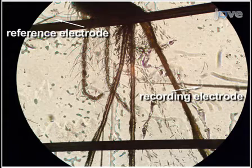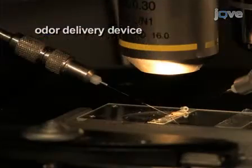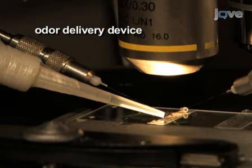Adjust the height of the electrodes so that the reference electrode is positioned just above the eye of the mosquito and the recording electrode is near the maxillary palps. Place the odor delivery device so that it is as close as possible to the palps.